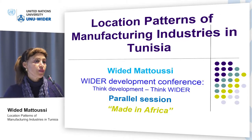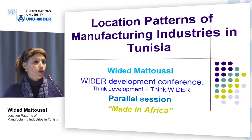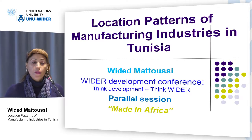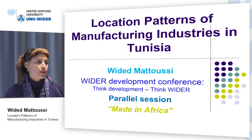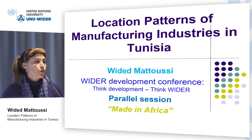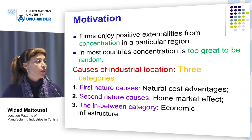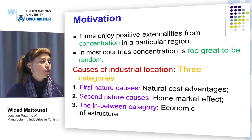The literature on agglomeration economies shows that firms enjoy positive externalities from concentration of economic activities in a particular region. In most countries, concentration is too great to be random. Concentration is indeed determined by the complex interaction of many factors. We broadly distinguish between three main categories of factors.